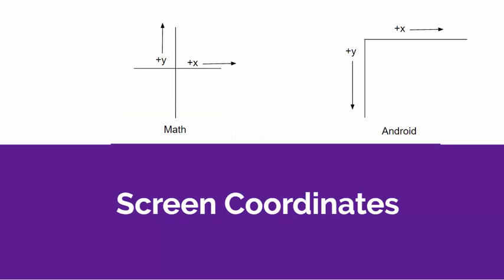Now let's talk about screen coordinates. In math class, you typically have an xy coordinate system with the origin in the center. Positive x values go to the right and negative x values go to the left. Positive y values go upward and negative y values go downward.